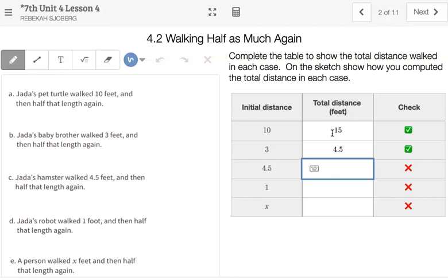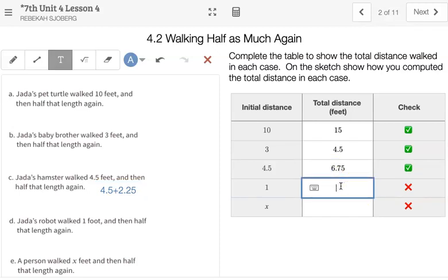But Jada's hamster walked 4.5 feet and then half of that, and half of 4.5 is 2.25. This one I might end up going something like 4.5 plus 2.25 just to keep track, and that is 6.75 feet. The next one, robot walked 1 foot and half of that again, 1 plus 1 half, that's just 1.5.